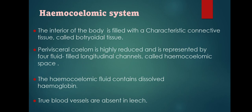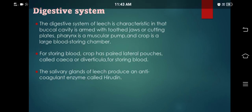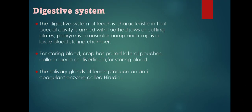The digestive system of the leech is characteristic: the buccal cavity is armed with toothed jaws or cutting plates; the pharynx is a muscular pump; and the crop is a large blood-storing chamber. The crop has paired lateral pouches called caeca or diverticula for storing blood. The salivary glands produce an anticoagulant enzyme called hirudin.